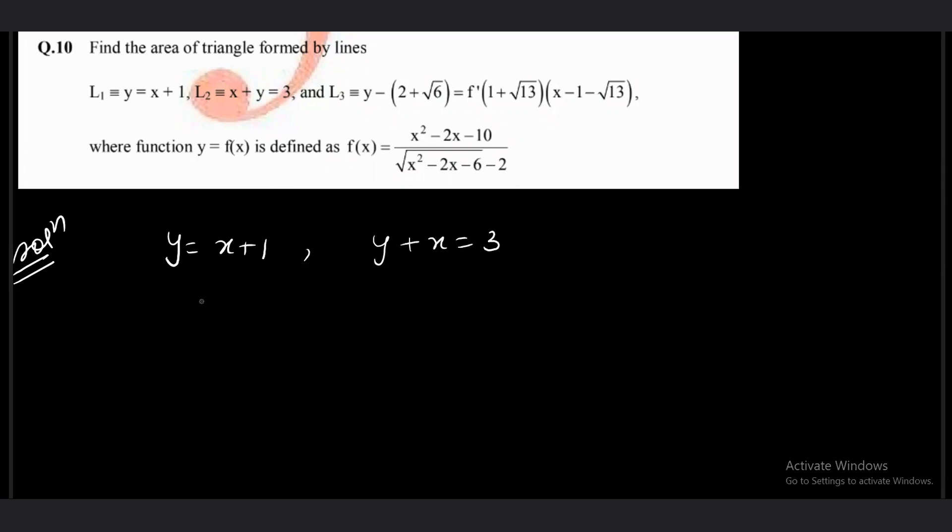Third line, there is some issue. We don't know the slope, we need to take a look at the slope. This is equal to f dash (1 plus root 13) times (x minus 1 minus root 13). It looks as if we are writing down the tangent line to a curve f(x).